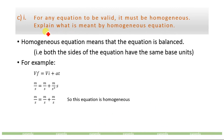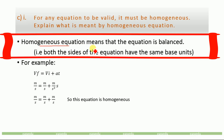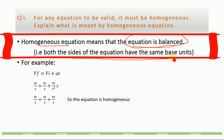Part C: for any equation to be valid it must be homogeneous. A homogeneous equation is a balanced equation, meaning the units on both sides of the equation are the same — both sides have the same base units.